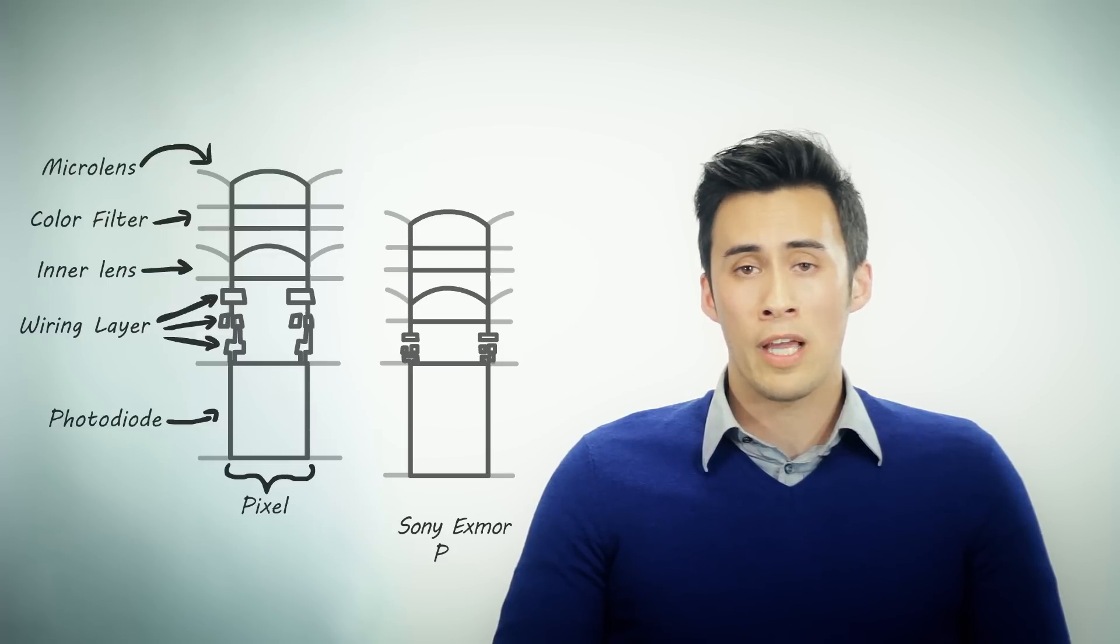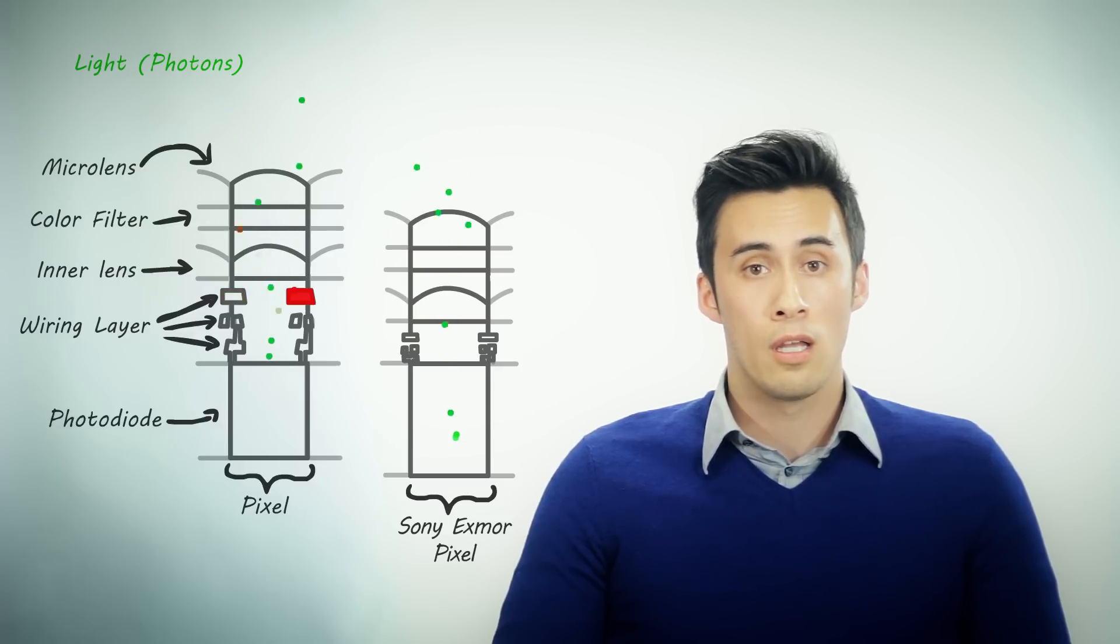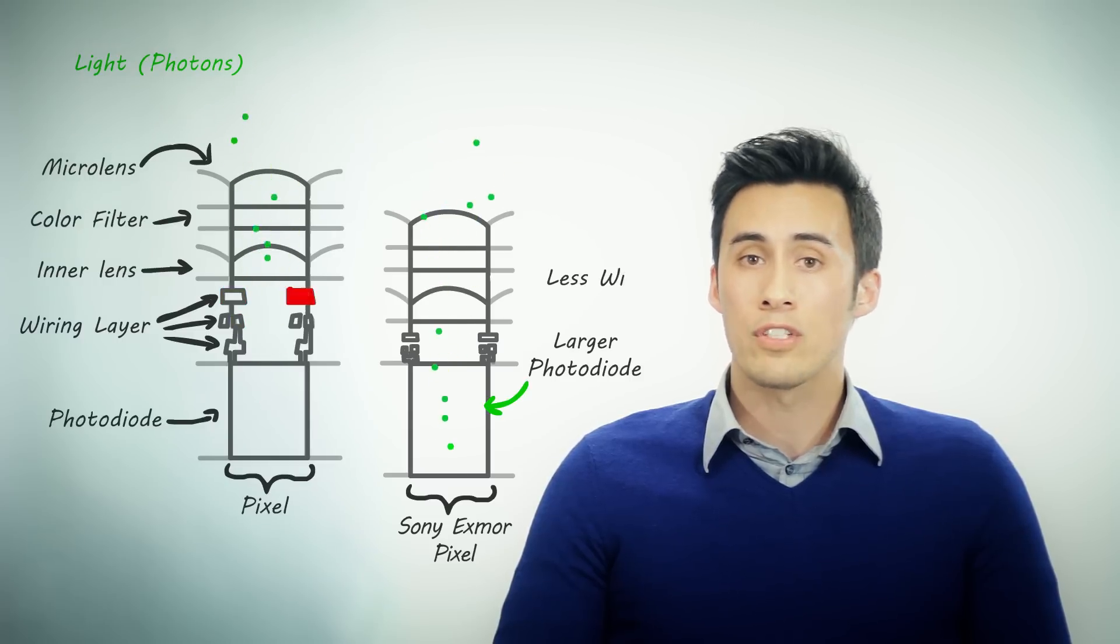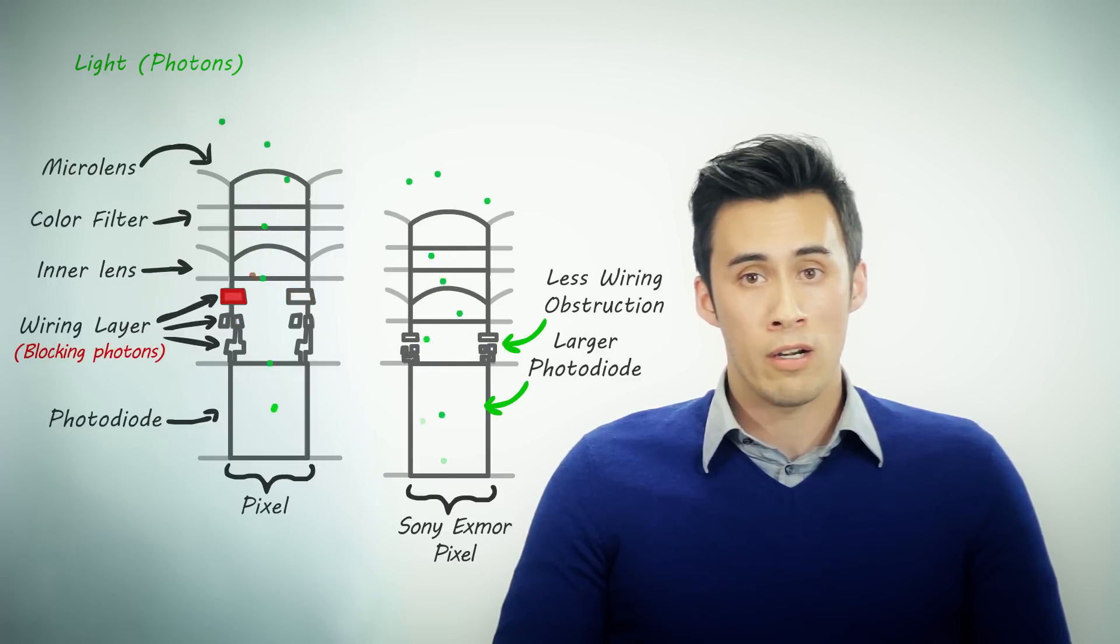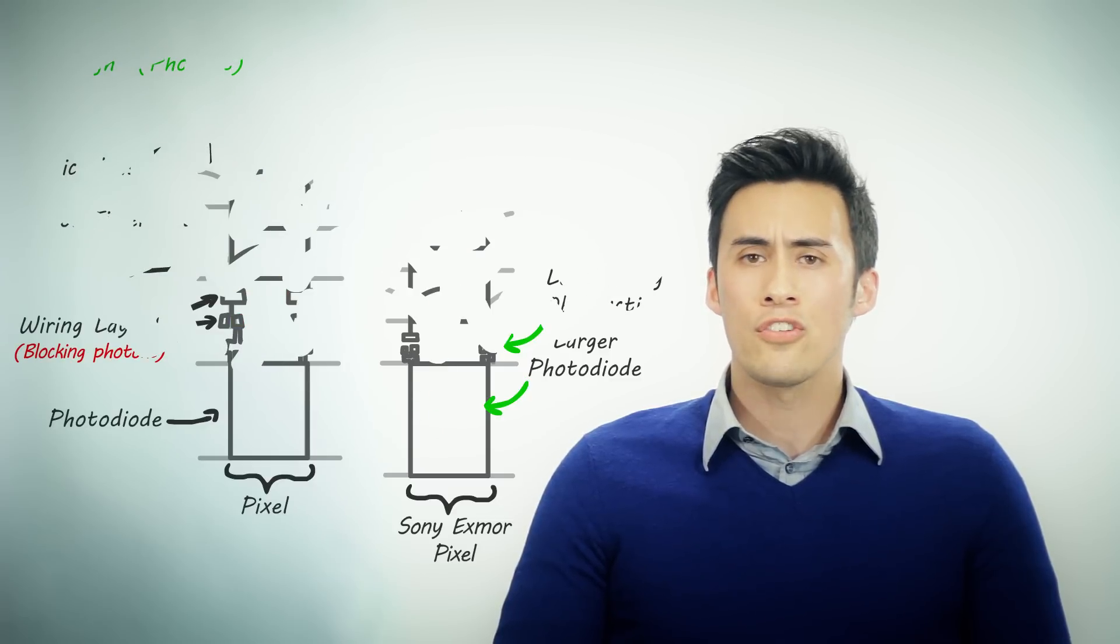In a Sony CMOS sensor with Exmor technology, Sony optimizes this entire pixel structure to increase signal efficiency. There are many optimizations done, including an increase in photodiode size and a reduction of thickness in the wiring layer. This gives the light a greater area to collect while reducing any possible obstruction from the wiring layer.